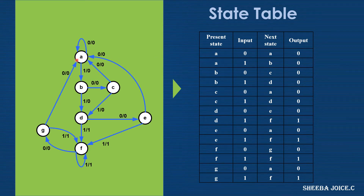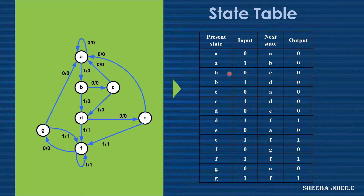When the present state is A and the input is one, it moves to the next state B with the output zero. So likewise, we can complete the entire state table for all seven states for inputs zero and one.